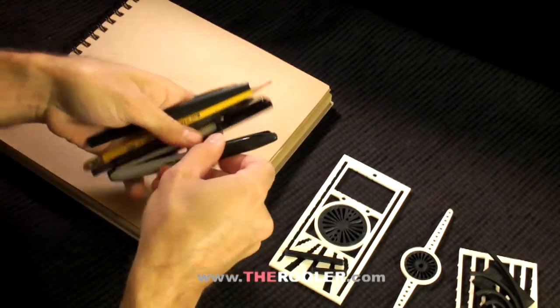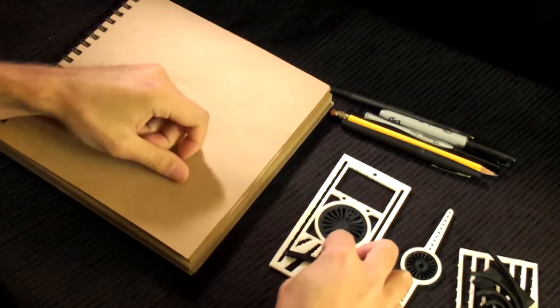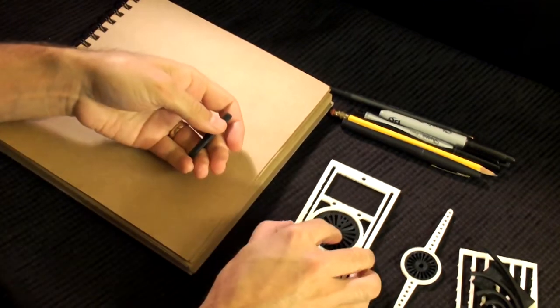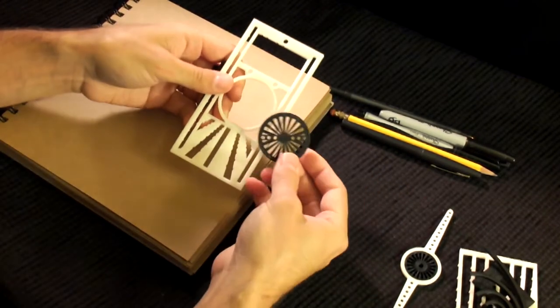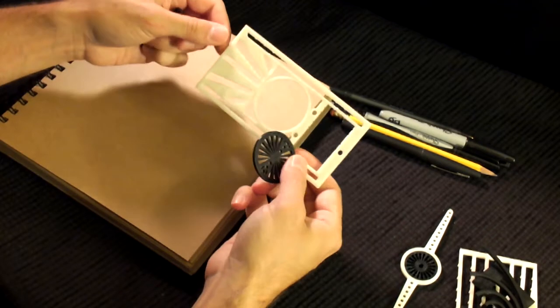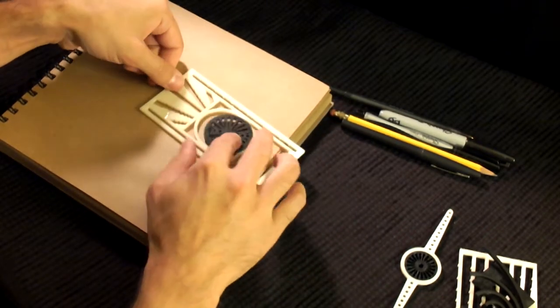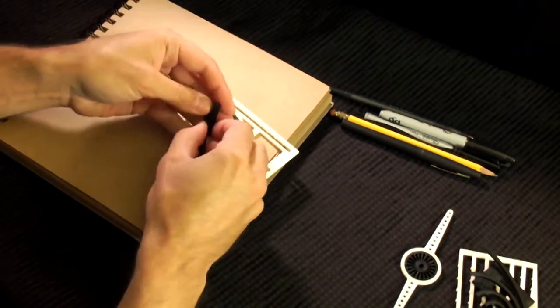The first product I'm going to talk about is the ruler itself, which is essentially the white frame, the wheel, and two of the markers that are used for creating different aspect ratios.